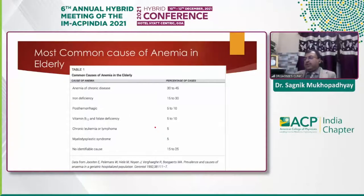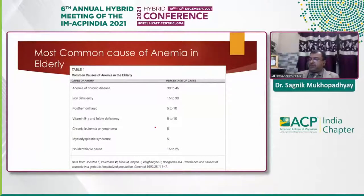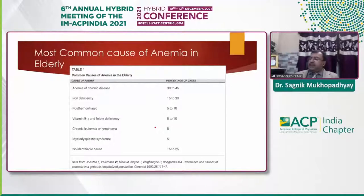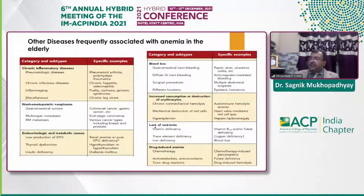The most common causes of anemia in elderly: anemia of chronic disease constitutes about 30 to 45 percent of patients. Iron deficiency anemia comes next at 15 to 30 percent. Post-hemorrhagic anemia accounts for 5 to 10 percent, vitamin B12/folate deficiency 5 to 10 percent, leukemia and other blood dyscrasias 5 percent, MDS 5 percent, and no identifiable cause in 15 to 25 percent. However, the number of unexplained anemia cases is decreasing with newer diagnostic modalities.